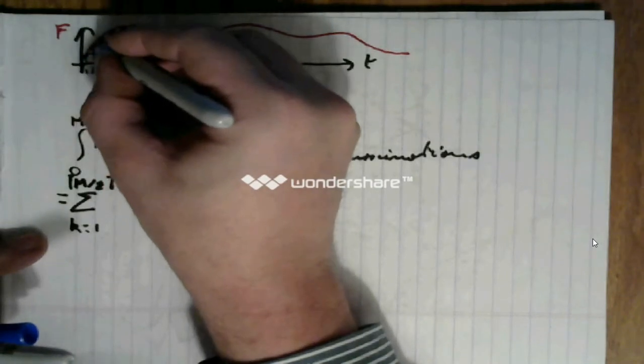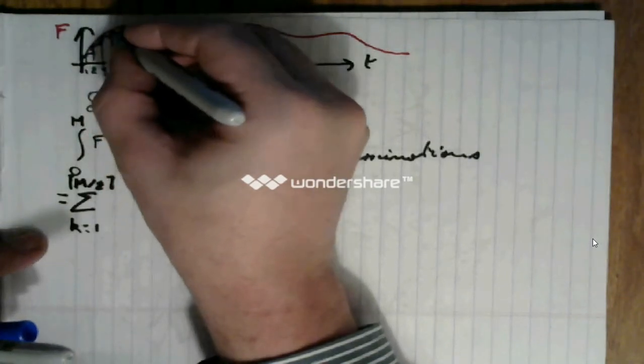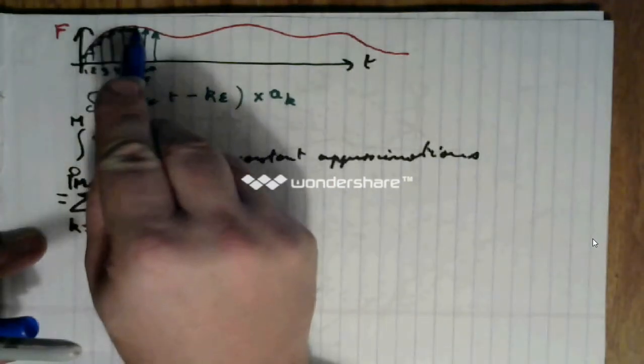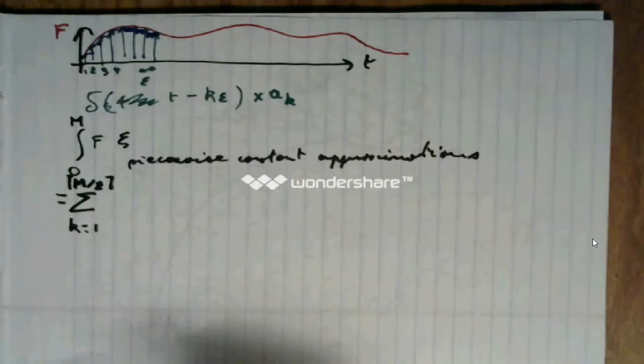So, f is like this, then like that, then like this, then like that, etc. It's sort of a staircase approximation of f.